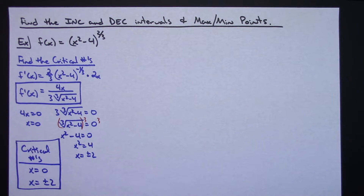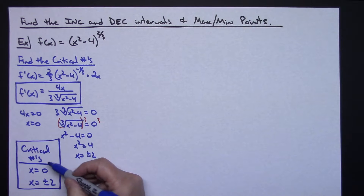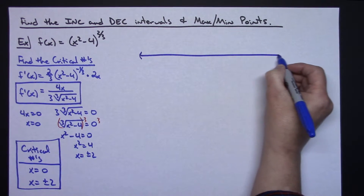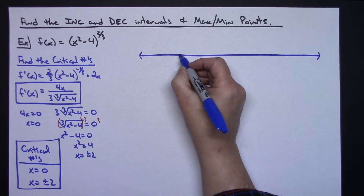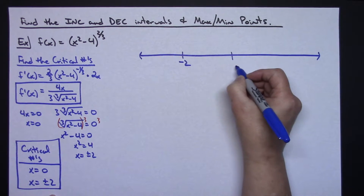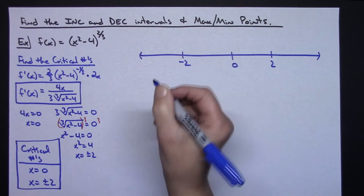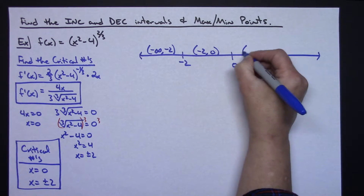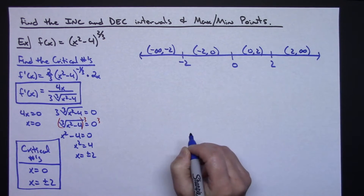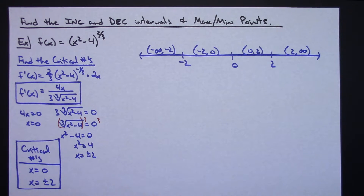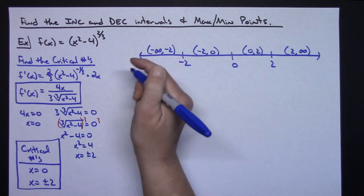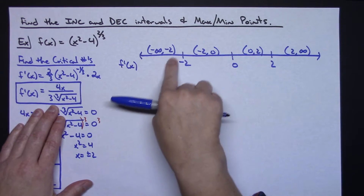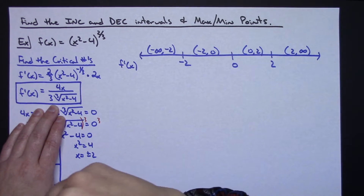Now I'm going to organize all of this on a number line. I'll take the critical numbers and put them on a number line: negative 2, 0, and 2. Above that I'll write my intervals: negative infinity to negative 2, negative 2 to 0, 0 to 2, and 2 to infinity. To apply the first theorem, I need to look at what my derivative is doing in each interval — I'll label f'(x), and all I need to know is whether the derivative is positive, negative, or zero.